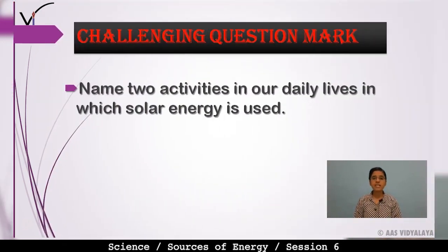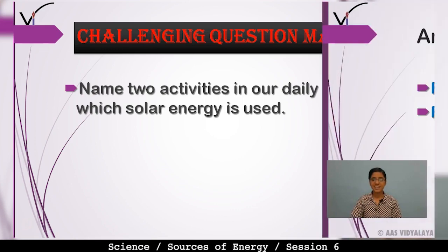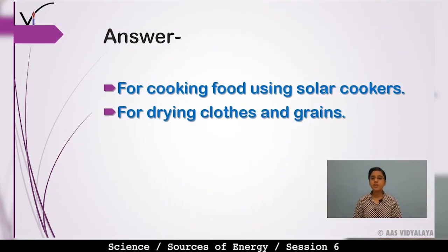Now for today's challenging question: name two activities in your daily life in which solar energy is used. The answers are: cooking food using solar cookers, and drying clothes and grains using sunlight — both are everyday activities that use solar energy.